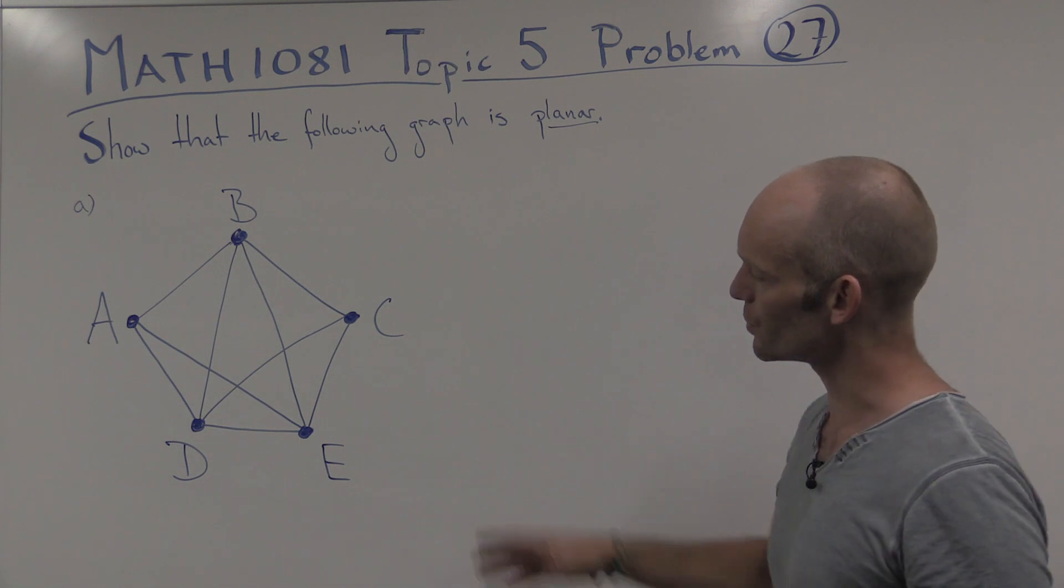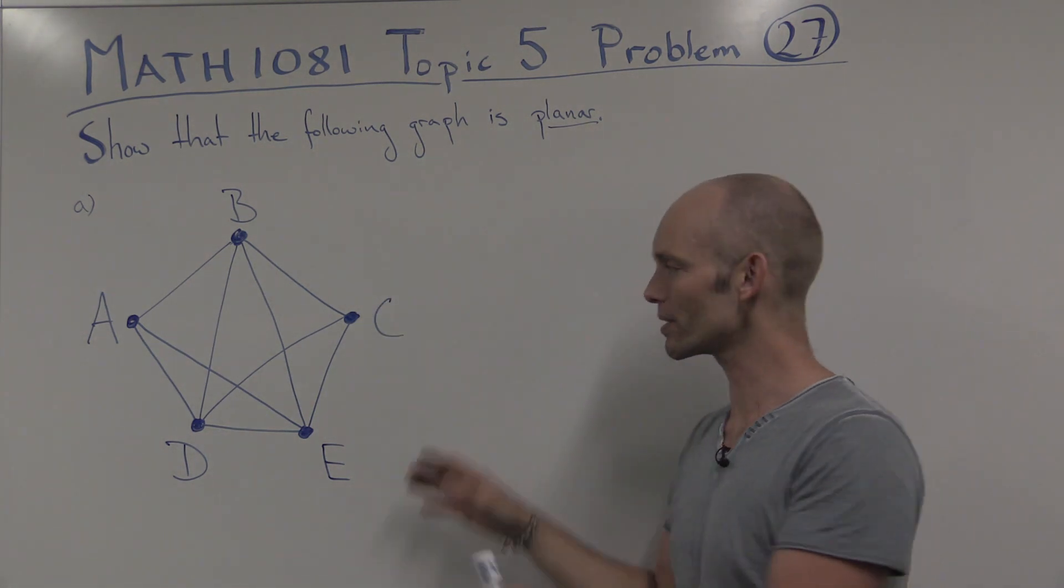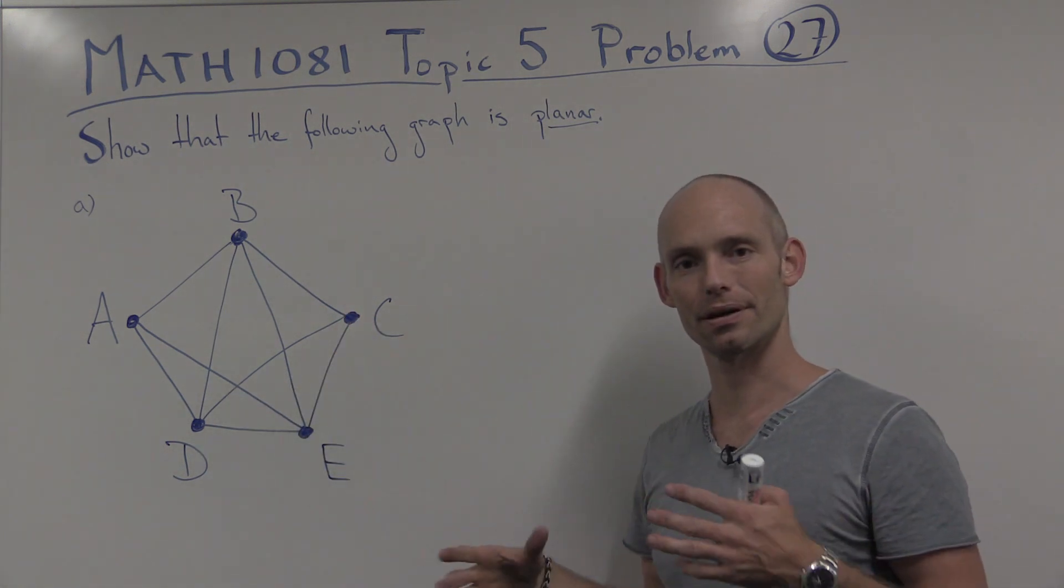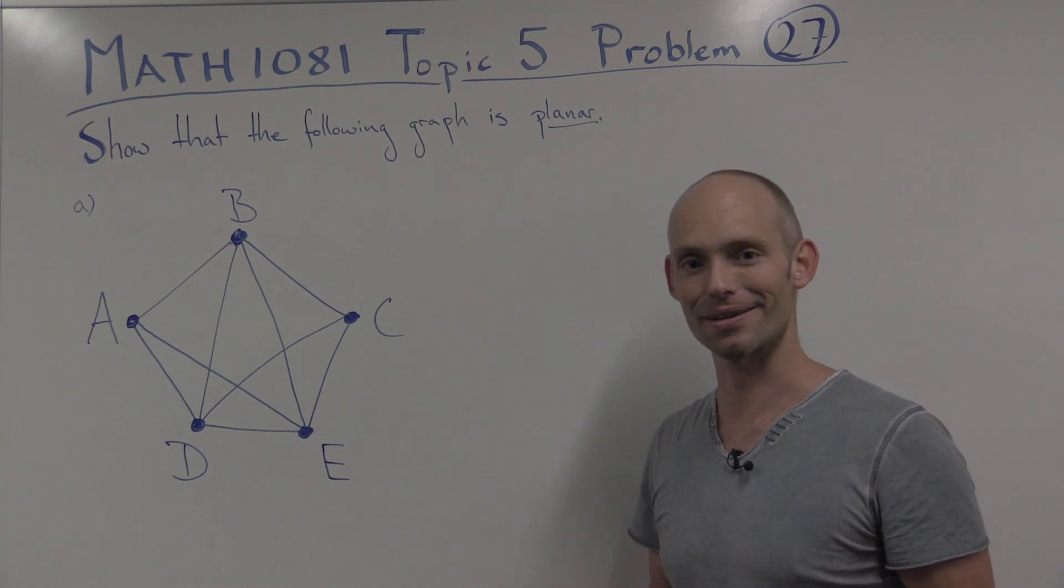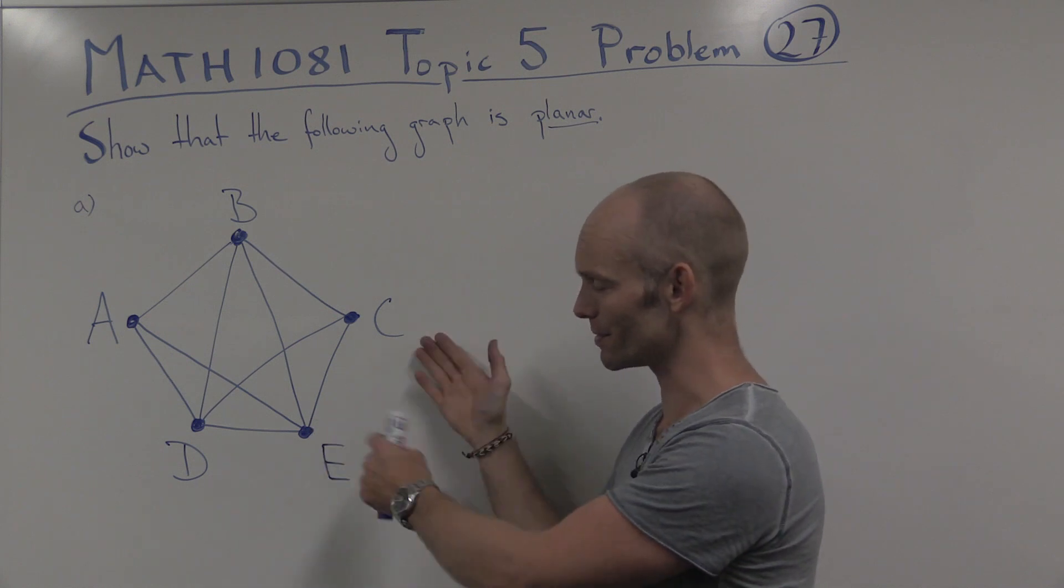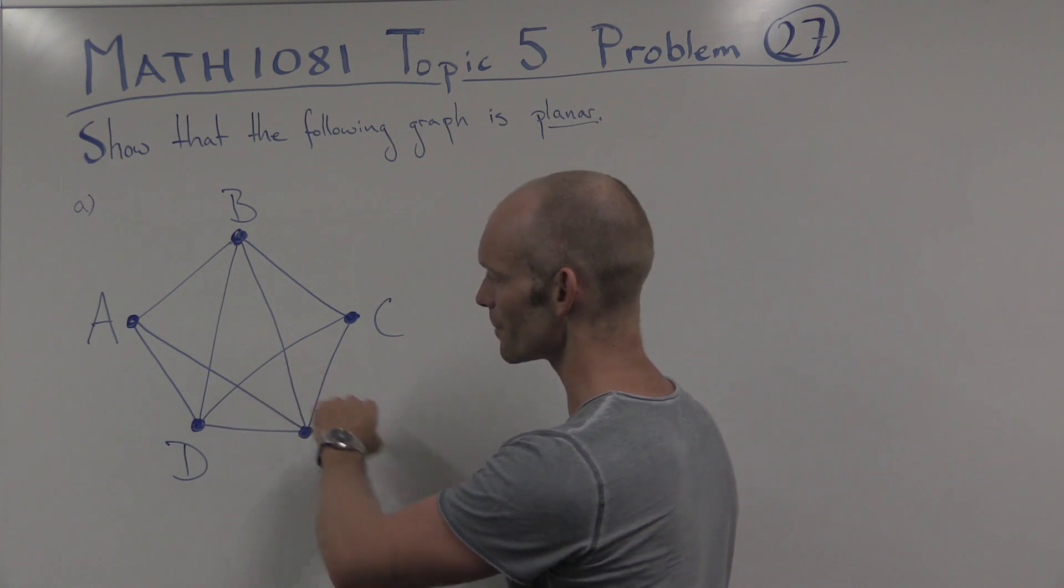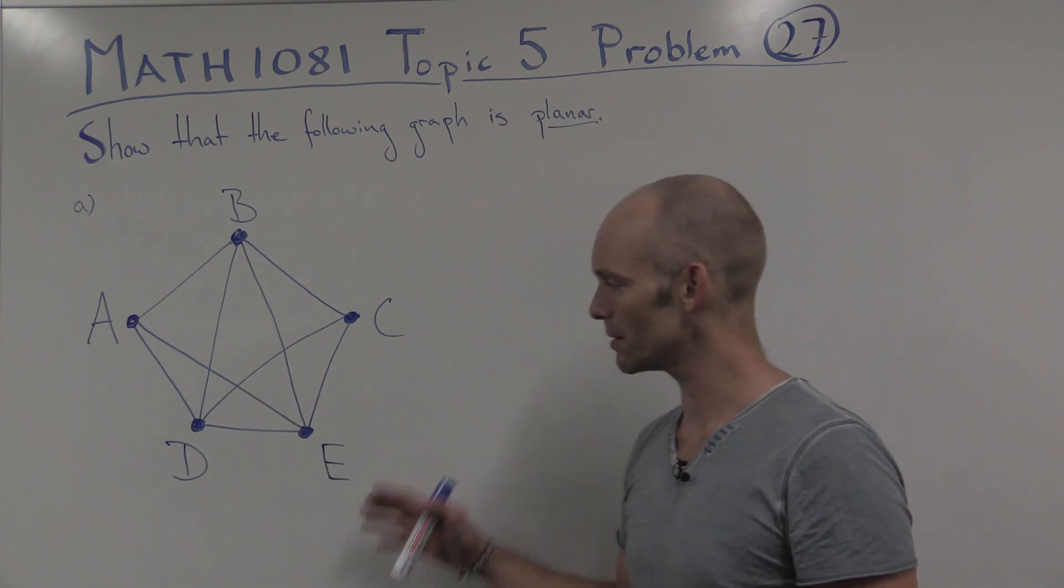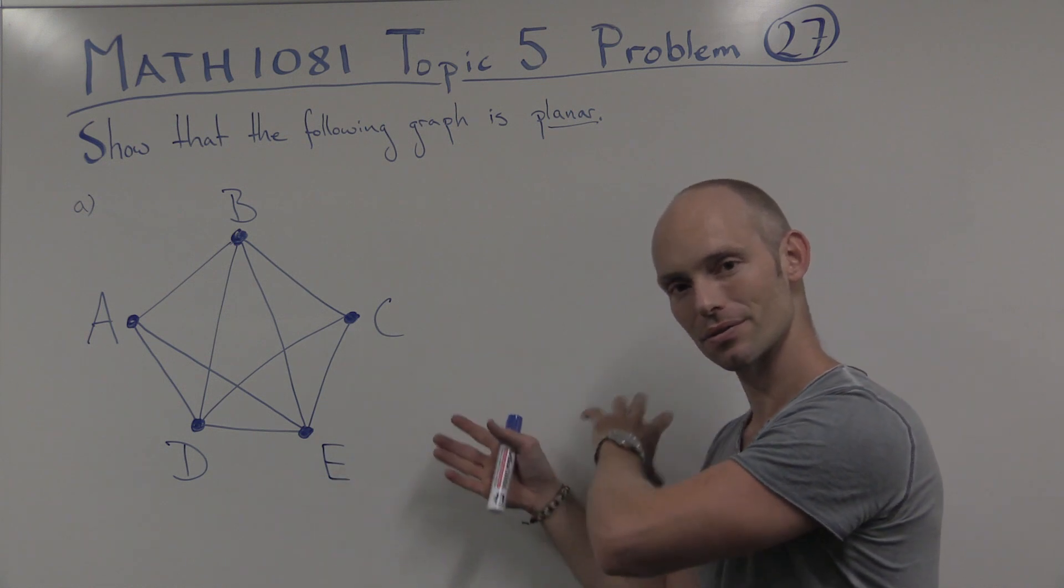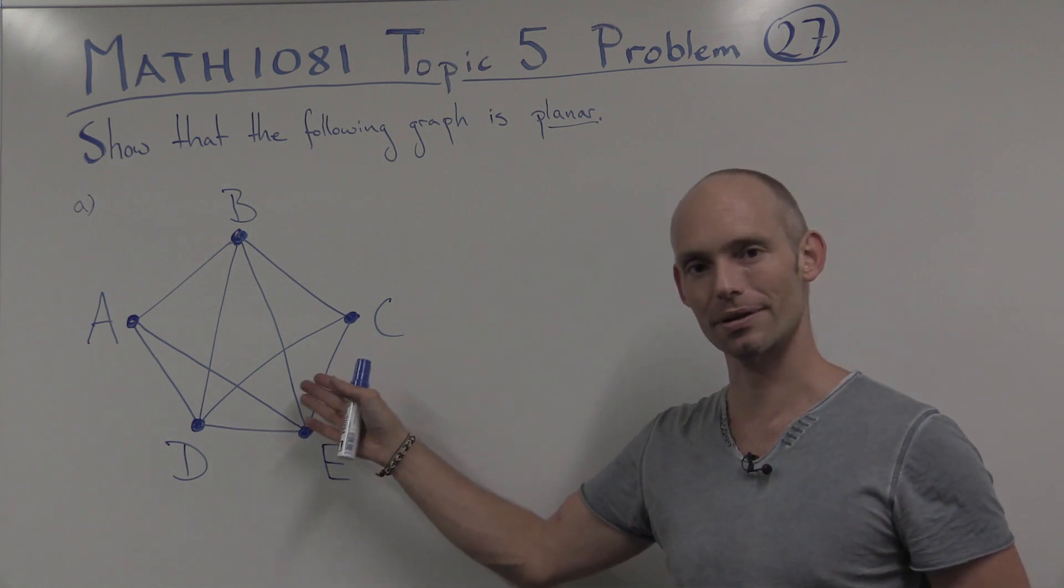So in this problem here, we're looking at a graph, and we want to show that it's planar. That means that we can redraw the graph in such a way that none of the edges cross each other. You can see here that we've got lines representing the edges that are crossing each other. We've got a crossing there, there, and there. So we have to take this picture of the graph and draw a new representation in such a way that we don't have any crossings like this.